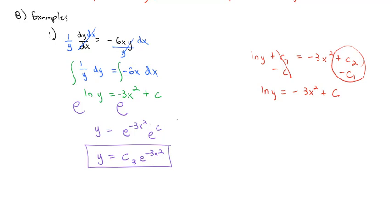A little note about constants: often in differential equations, e to the c is quickly just abbreviated as just c, and we know that's a different constant. Sometimes I'll drop the subscript, and technically that's being a little sloppy with our c's, but it's still a constant. We're not really defining the constant until our final answer anyway. So every c — the c on the left, the c on the right, the combined c, and the c in the front — those are all different constants. Be careful not to be confused by that. What's important is it is a constant times e to the negative 3x squared.